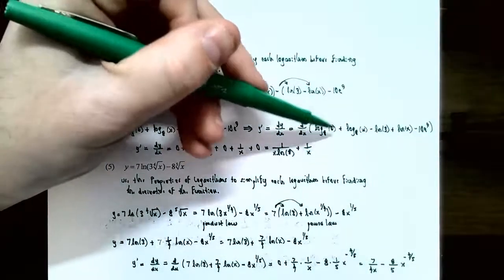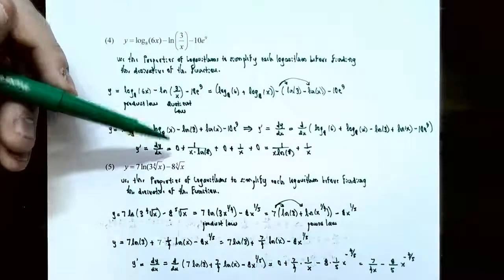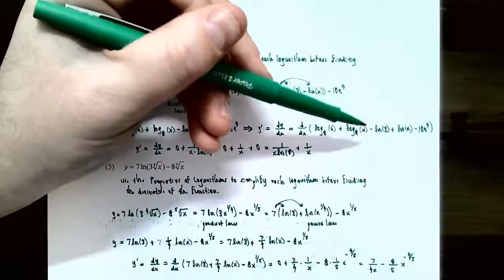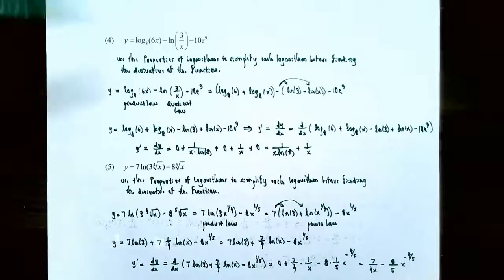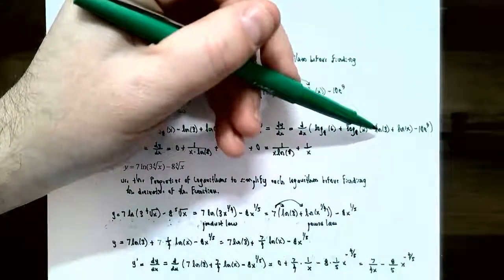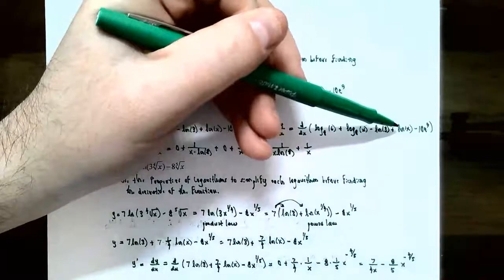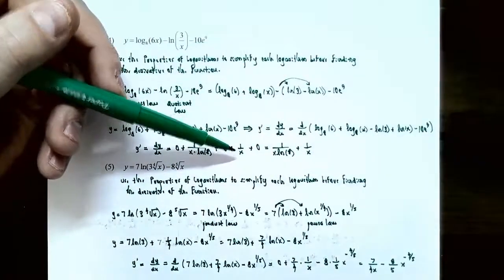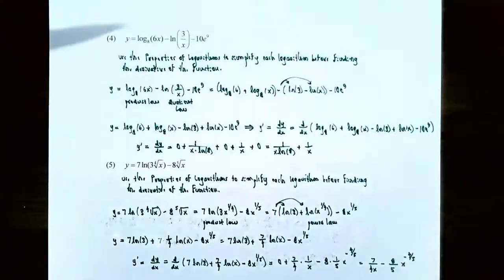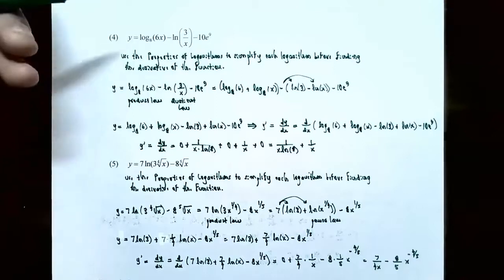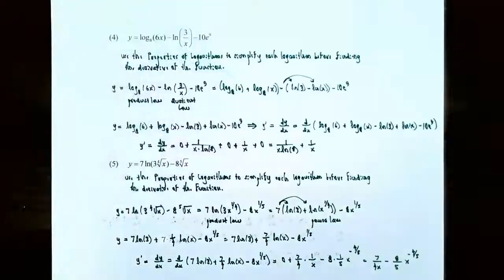Now take the derivative of each term. The derivative of log base 8 of 6 is 0 because it has no x variable — it's a constant. The derivative of log base 8 of x is 1 divided by x times natural log of 8. Natural log of 3 is also a constant, so its derivative is 0. The derivative of natural log of x is 1 divided by x. And 10e⁹ is a constant, so its derivative is 0 as well. Simplified: y prime equals 1 divided by x times natural log of 8, minus 1 divided by x.